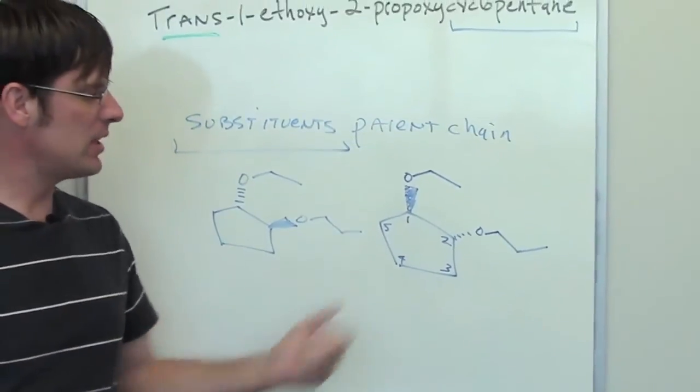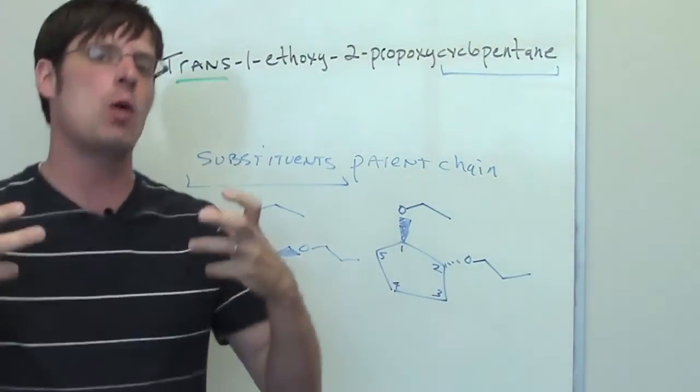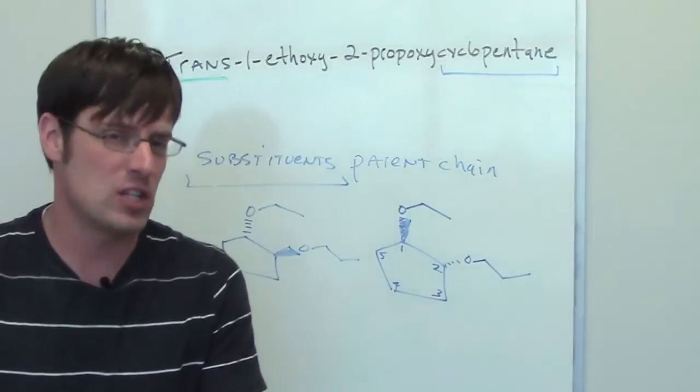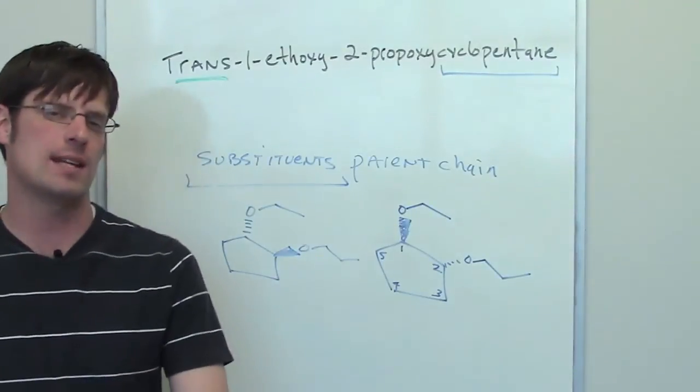These two molecules are both trans-1-ethoxy-2-propoxy-cyclopentane. You'll notice that they are, of course, stereoisomers of each other. In fact, these are enantiomers of each other, just so you know. But they are both completely correct answers.